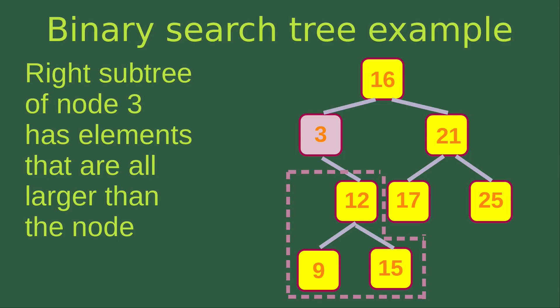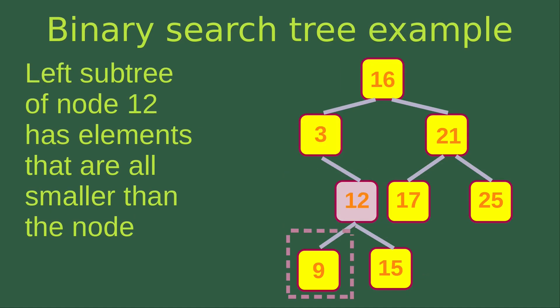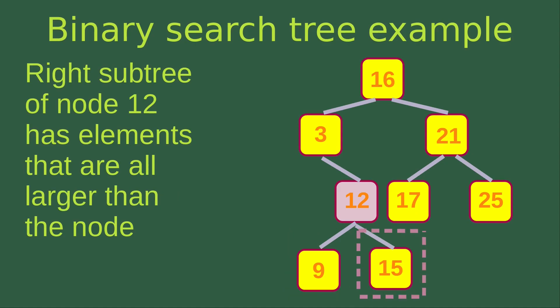Then we find the right subtree of node 3, and we can see that it has elements that are all larger than the node. The dashed line region tells us that all elements in that region are larger than 3. We can also see that the left subtree of node 12 has only element 9, which is smaller than the node. And the right subtree of node 12 has only element 15, which is larger than the node. So the description is satisfied.